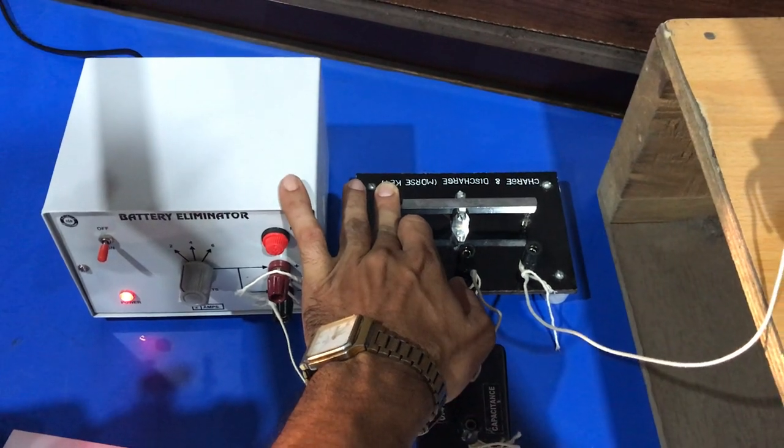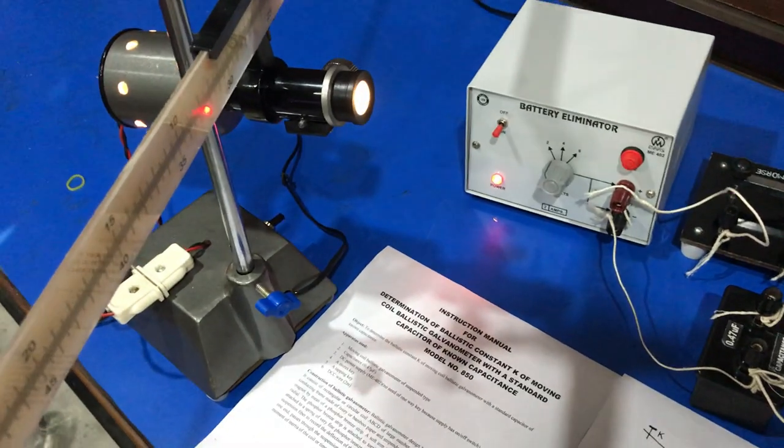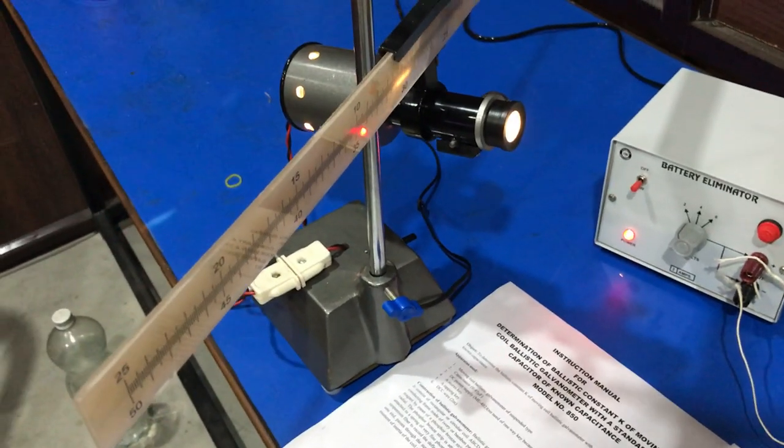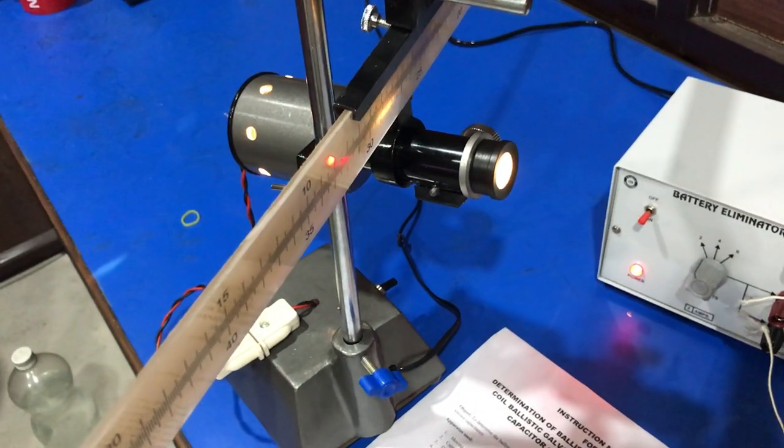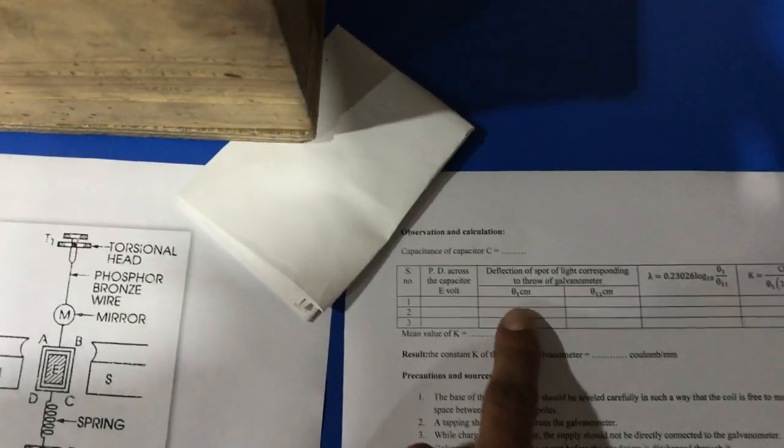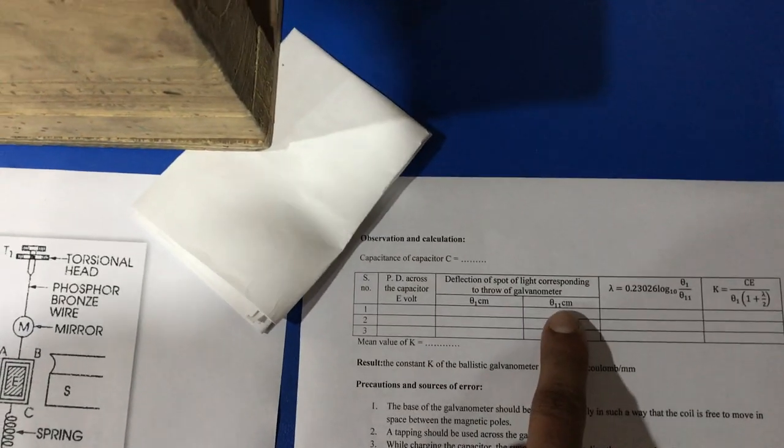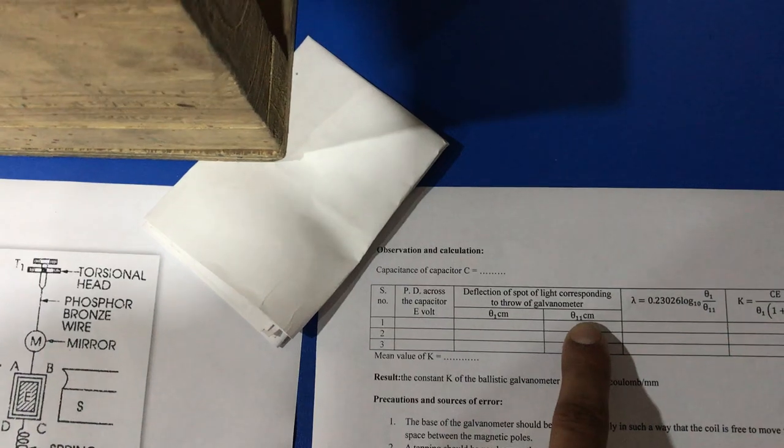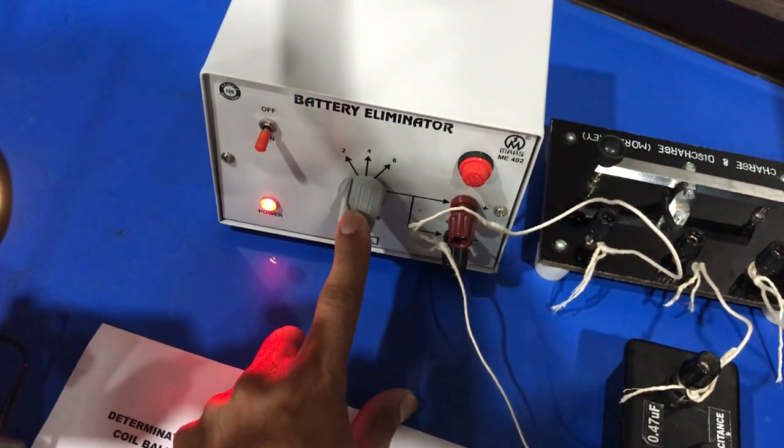Now when we release the Morse key, we observe that there is a deflection of light on the scale. We just note the first throw deflection and eleventh throw deflection, and also we note down the value of potential applied or voltage applied.